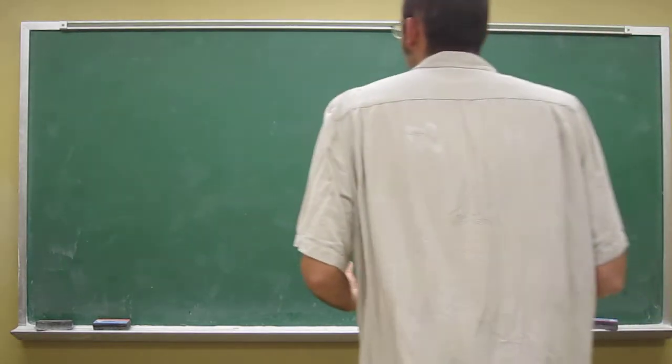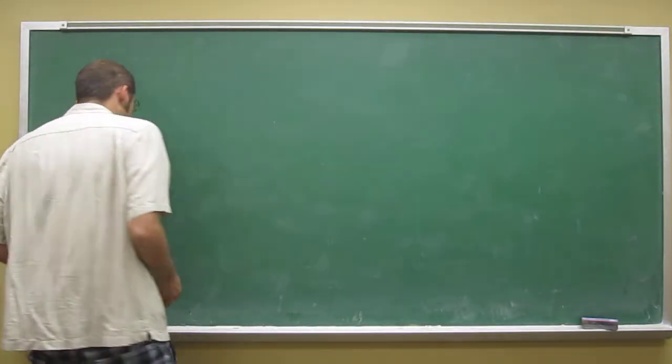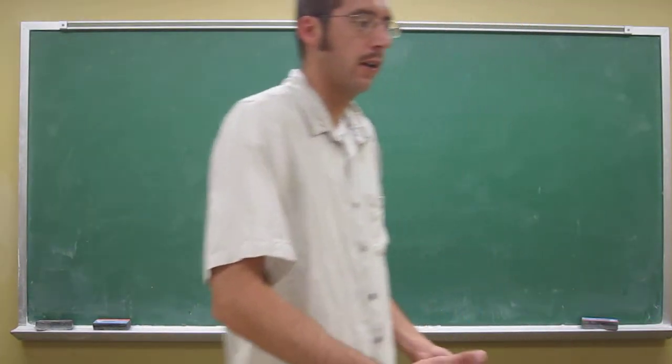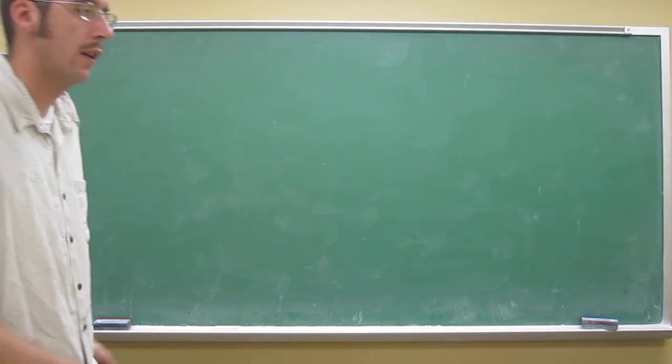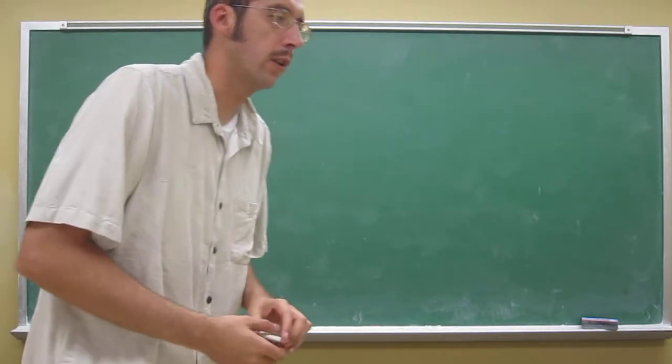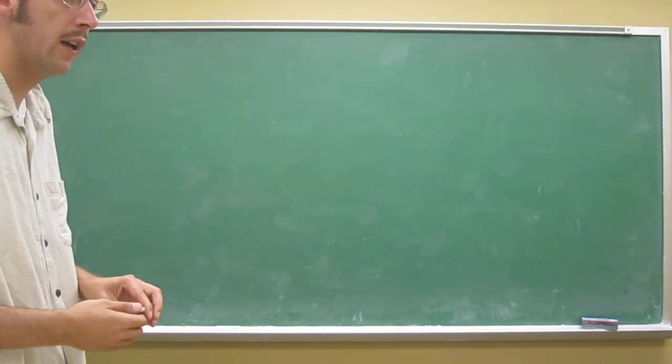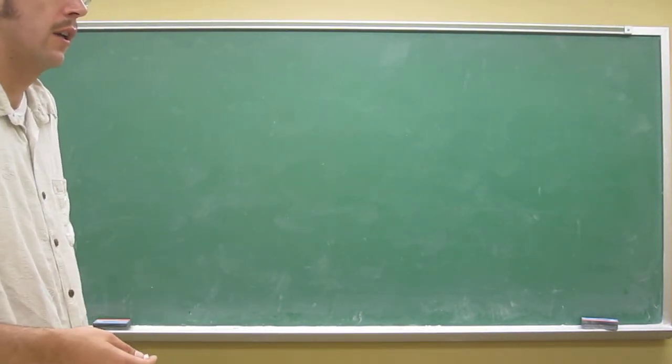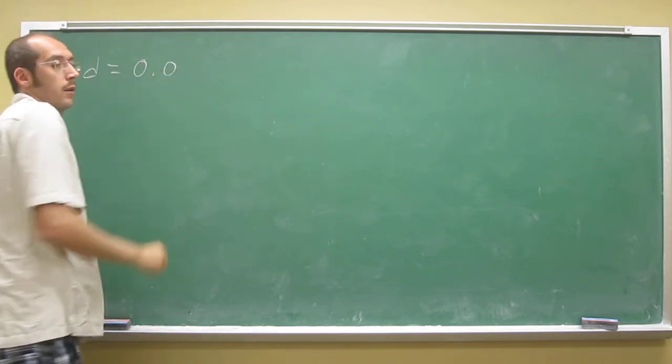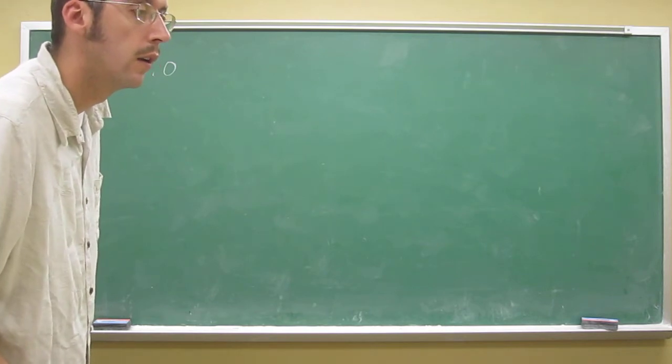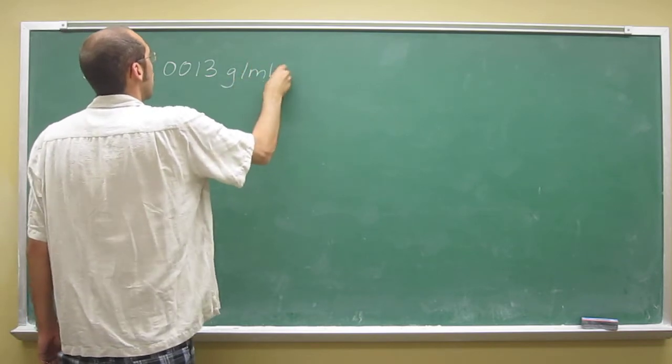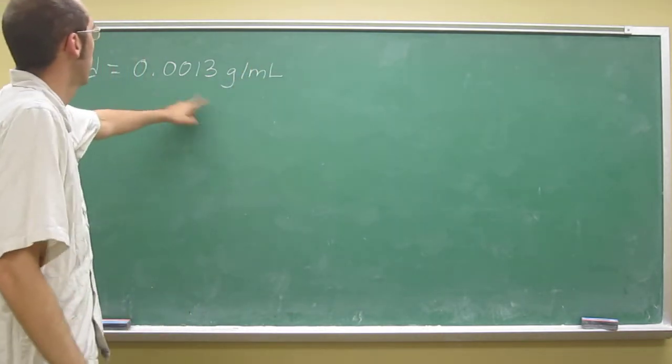Okay, so gases normally will have very low densities, and that's usually why they're on top of everything else, because they have a very low density. Remember that experiment that we did earlier. But anyways, the problem says air has a density of 0.0013 grams per milliliter. Okay, so notice very low density.